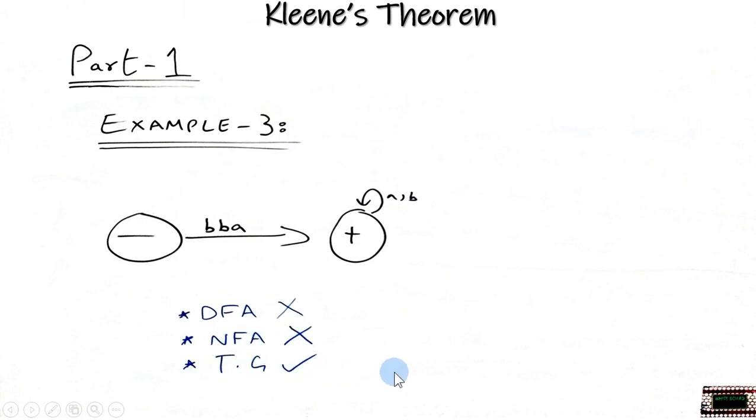This means that looking at these three examples, we have concluded that every FA is a TG, but it is not necessary that every TG should be an FA. So a TG could be an FA but it is not a necessary condition.